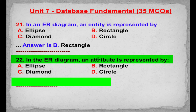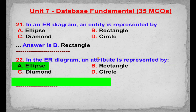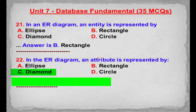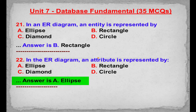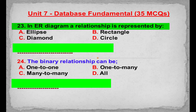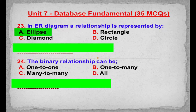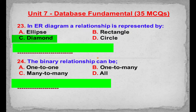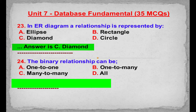MCQ number 22: In the ER diagram, a relationship is represented by. Option A: Ellipse. Option B: Rectangle. Option C: Diamond. Option D: Circle. Correct answer is Option C: Diamond.